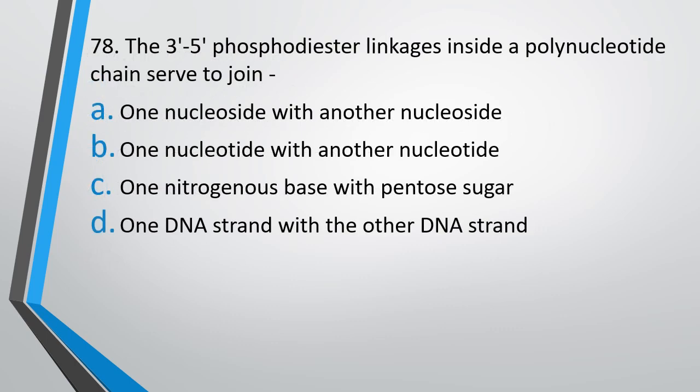Question number 78. The 3' to 5' phosphodiester linkages in a polynucleotide chain serve to join: (A) one nucleoside with another nucleoside, (B) one nucleotide with another nucleotide, (C) one nitrogenous base with a pentose sugar, (D) one DNA strand with another DNA strand. The correct answer is option B — it connects one nucleotide with another nucleotide.